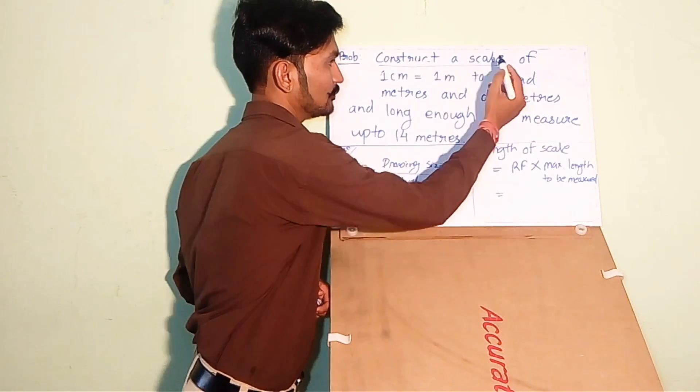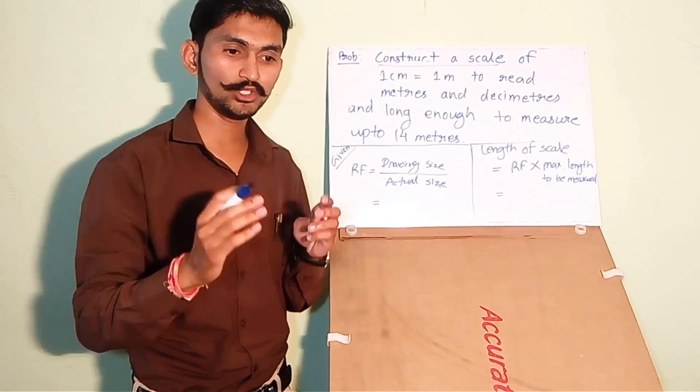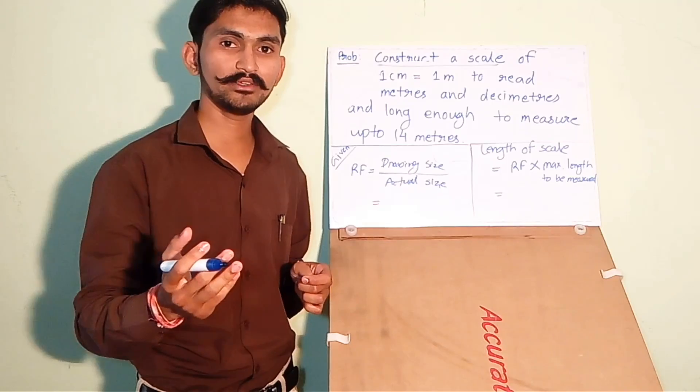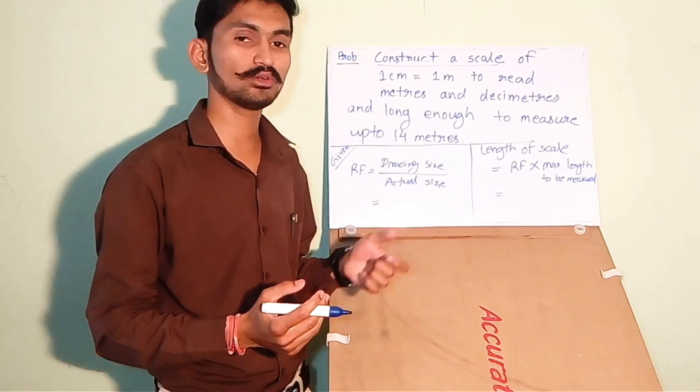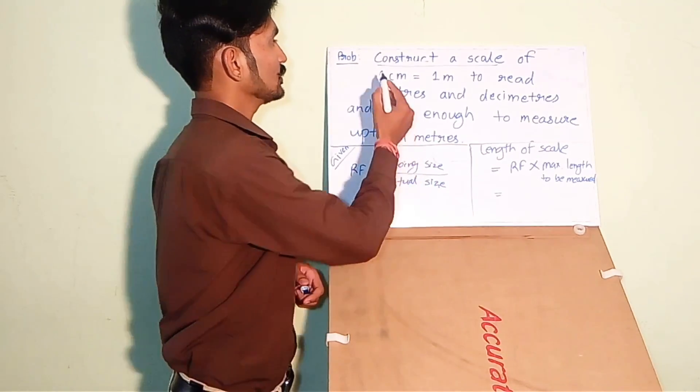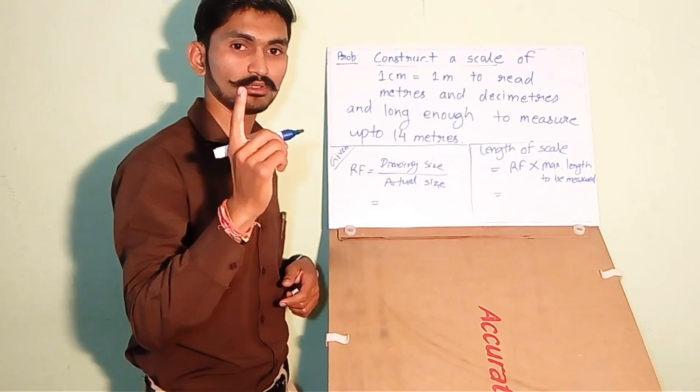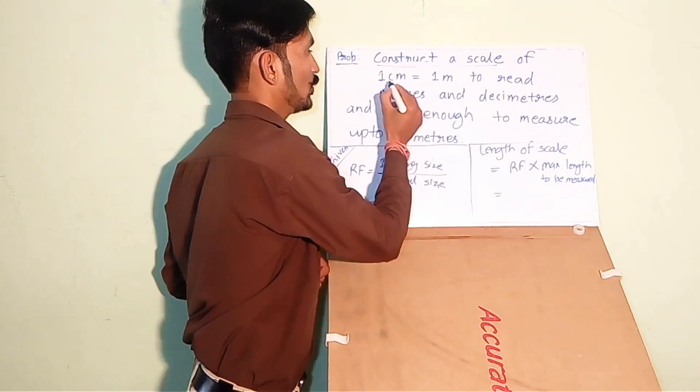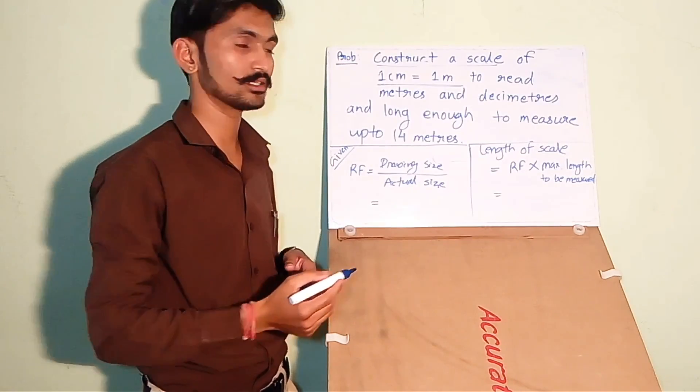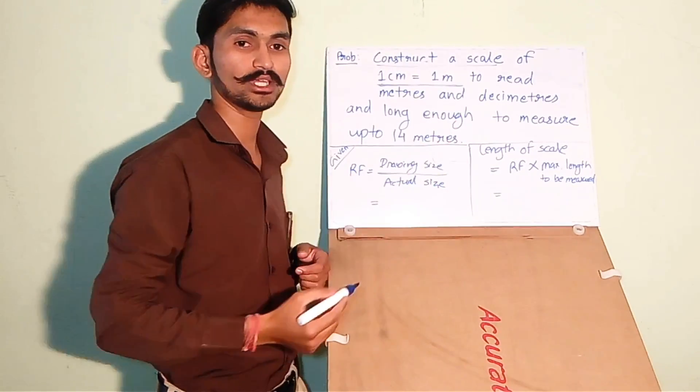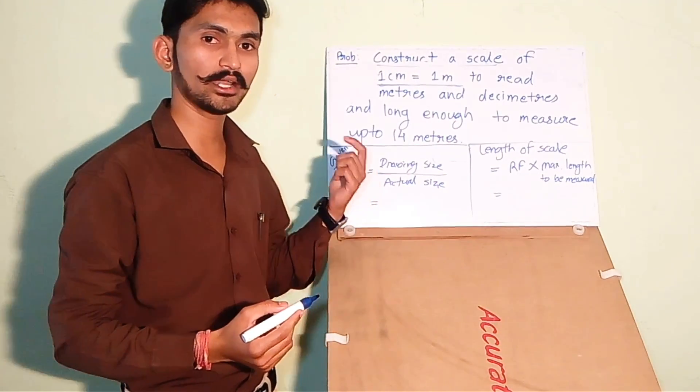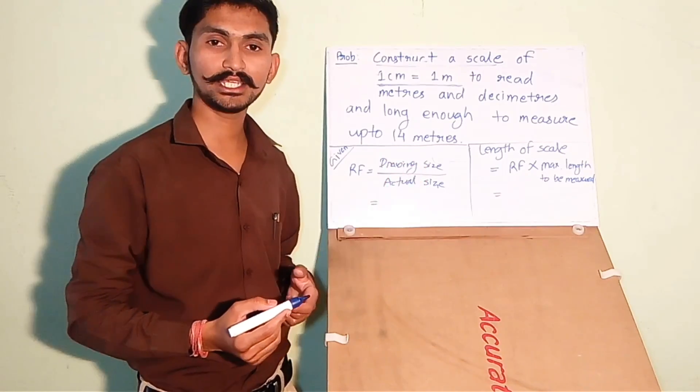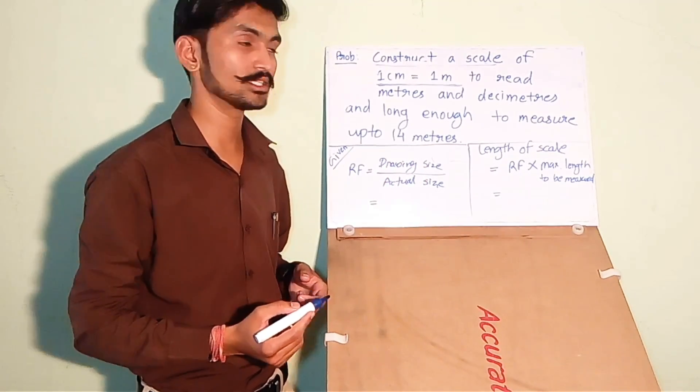Construct a scale. You have to divide the question into multiple segments to get different data which is given in the question. You have to construct a scale of 1 centimeter equals 1 meter. From this line you can get the RF because RF equals the drawing size divided by the actual size.